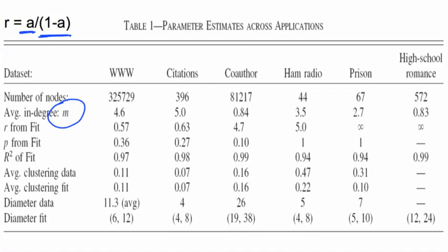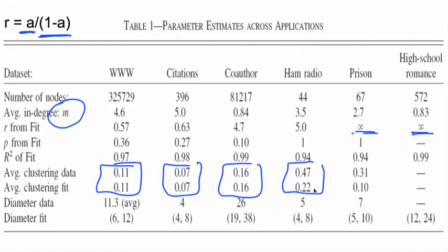And so you get these different Rs, some of them going off to infinity, looking like random networks. Some pretty much lower and looking like more preferential attachment. Then you can look at the fit of these things, but you can also look at the clustering that comes out. And the clustering actually from this model fits remarkably well. Some of them, the fit isn't doing as well. It's not generating quite as much clustering as overall. But for some of them, it hits it remarkably closely.